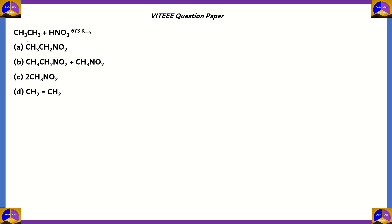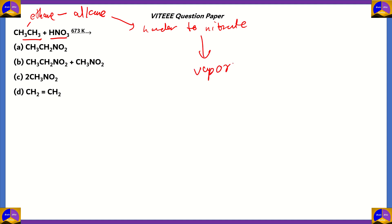Let's look at the next question. This one is from Chemistry. CH3CH3 plus HNO3, at 673 degrees Kelvin, gives us which of these options? CH3CH3 is ethane, which is an alkane — a saturated hydrocarbon where all carbon atoms are bonded with single bonds. HNO3 is nitric acid. Alkanes are harder to nitrate, but they do have a process called vapor phase nitration. HNO3 at 673 degrees Kelvin creates fumes, which is why it's called vapor phase nitration.